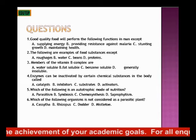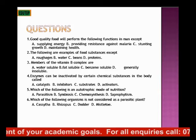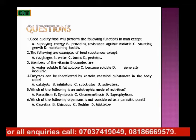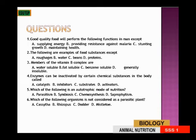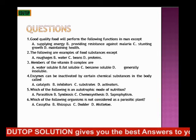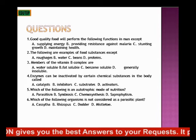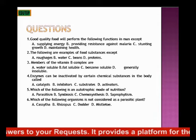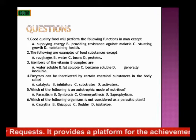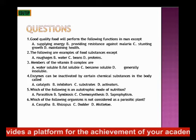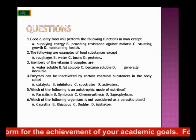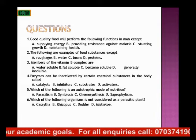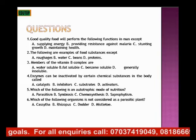Question 4: Enzymes can be inactivated by certain chemical substances in the body called: A. Catalysts. B. Inhibitors. C. Substrates. D. Activators. Question 5: Which of the following is an autotrophic mode of nutrition? A. Parasitism. B. Symbiosis. C. Chemosynthesis. D. Saprophytism. Question 6: Which of the following organisms is not considered a parasitic plant? A. Cassytha. B. Rhizopus. C. Dodder. D. Mistletoe.